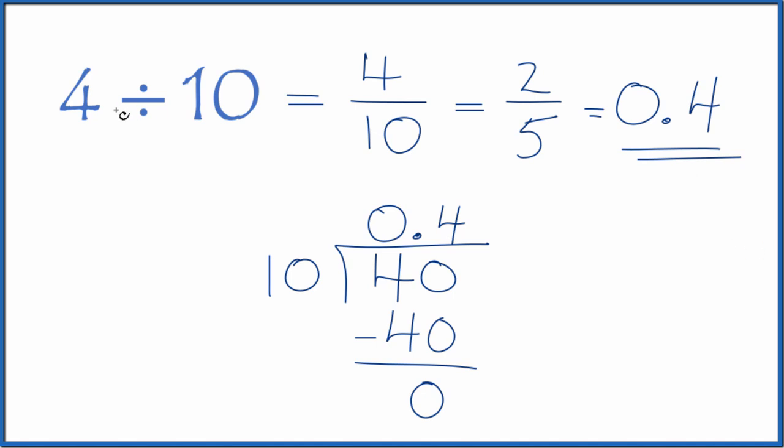So to answer our question, 4 divided by 10 equals the fraction 4 tenths, which you can simplify to 2 fifths, or 4 divided by 10 equals 0.4, the decimal.